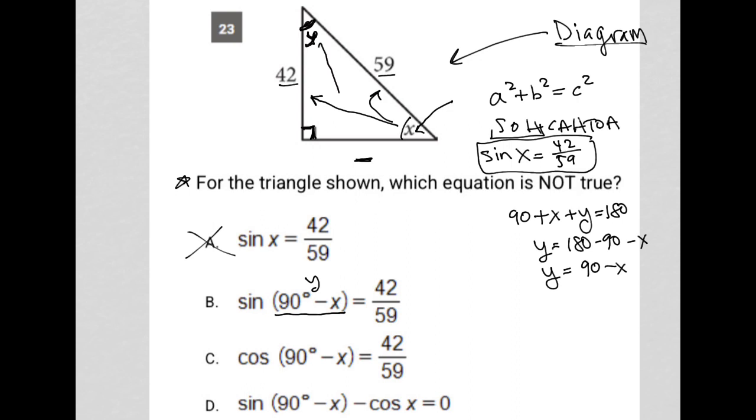So the sine of that would be opposite, which we don't know. Let's call that A. So this is not true, because the sine of Y should be A over 59, not 42 over 59. So this one is most likely the correct answer.